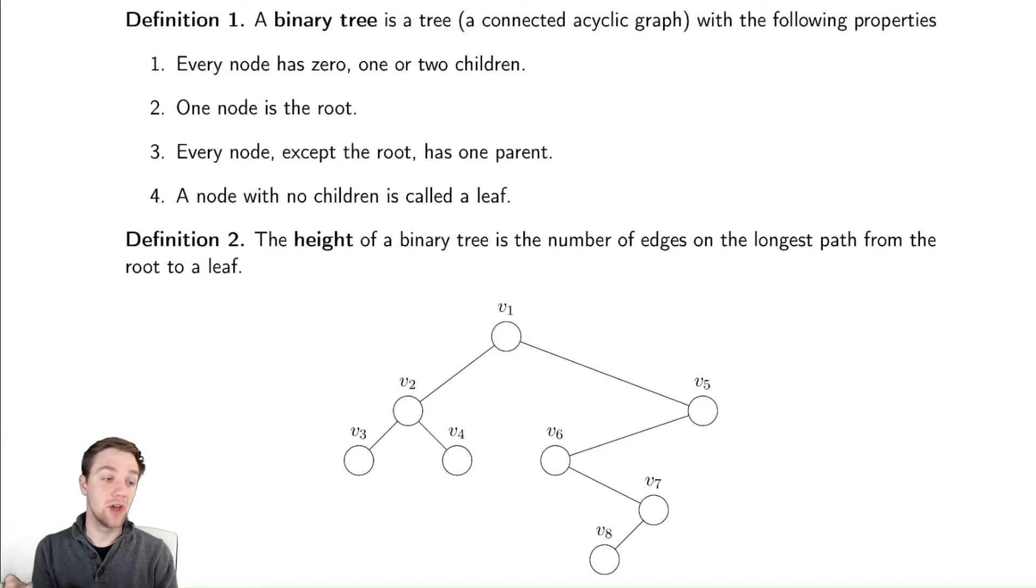And with that in mind, the height of a tree is going to be the length of the longest path from the root, which is here drawn at the top, down to a leaf. So the longest path here is 1, 2, 3, 4. So the height of this tree will be 4.